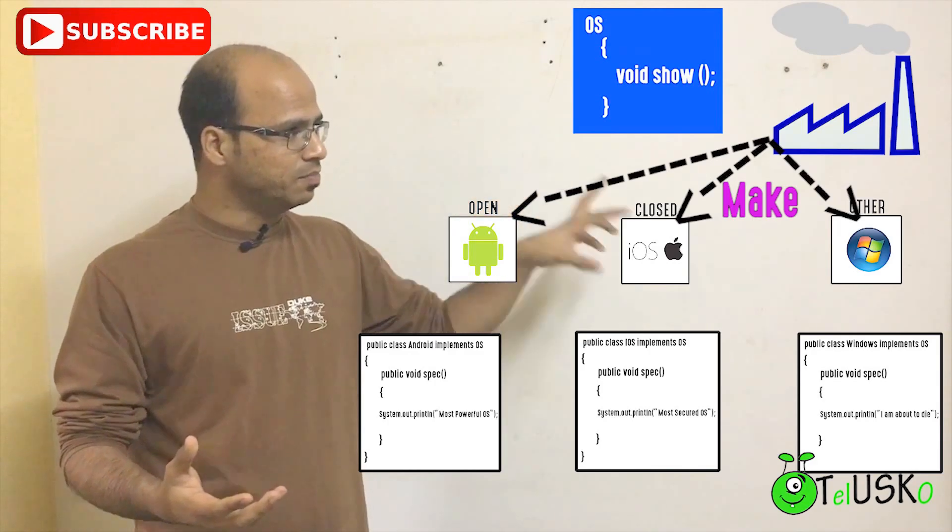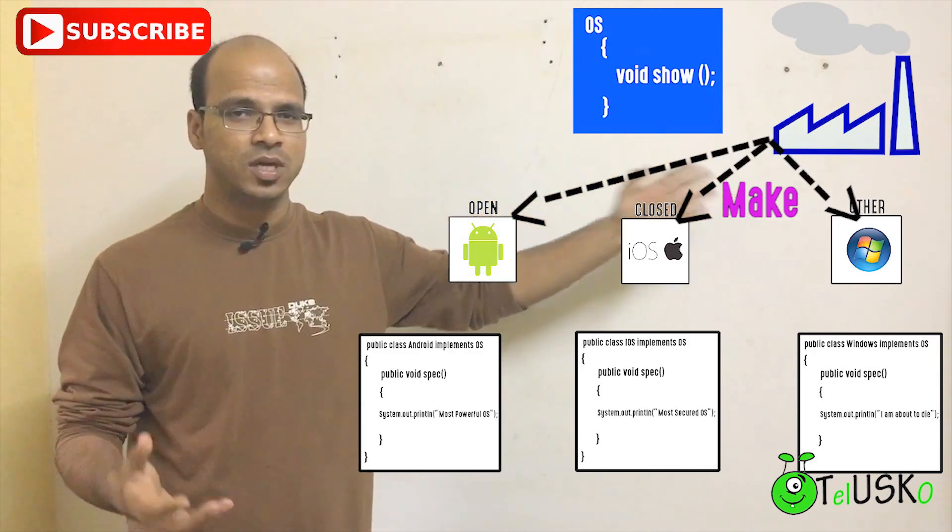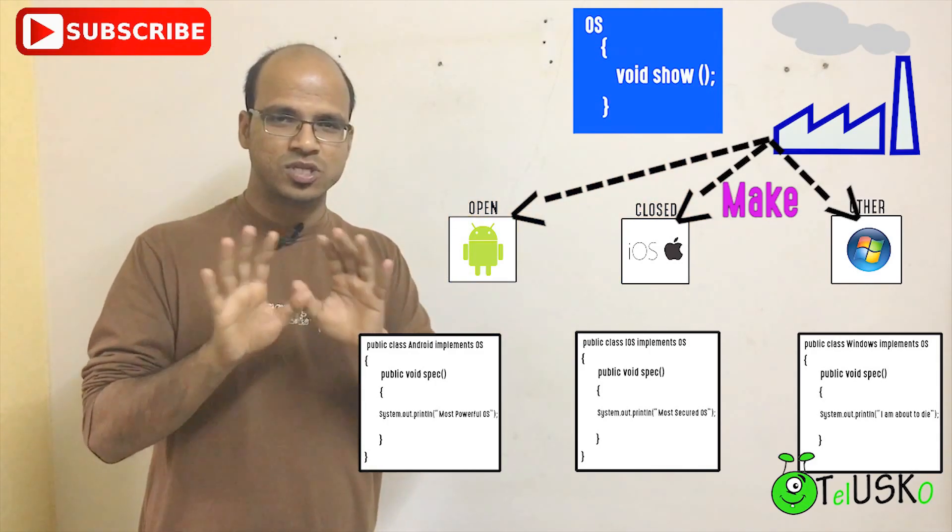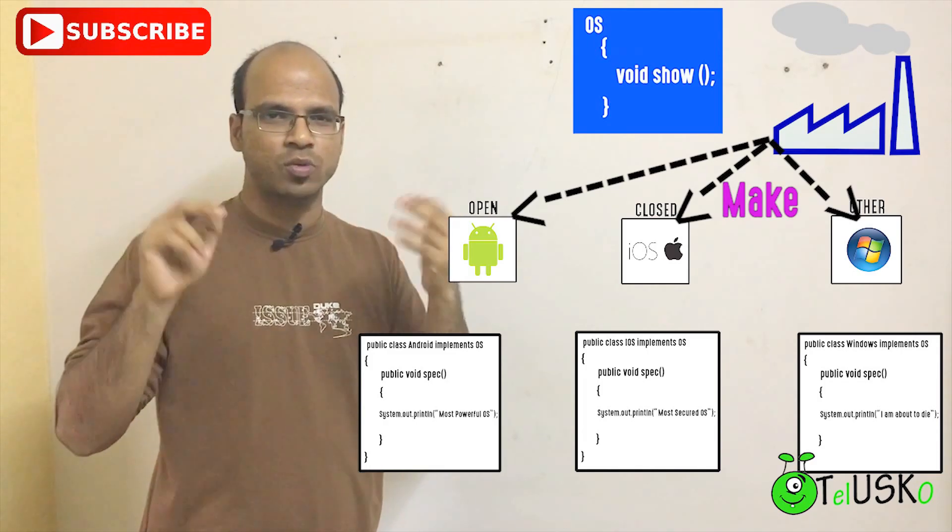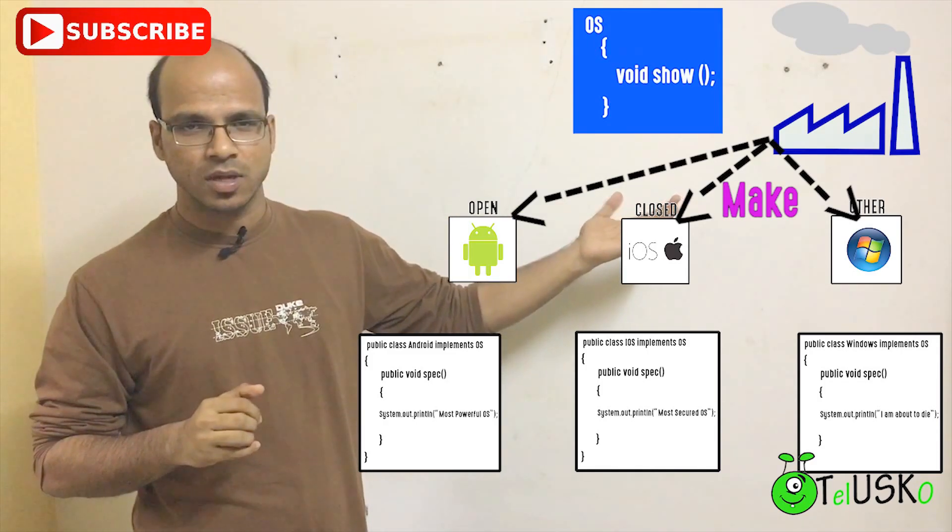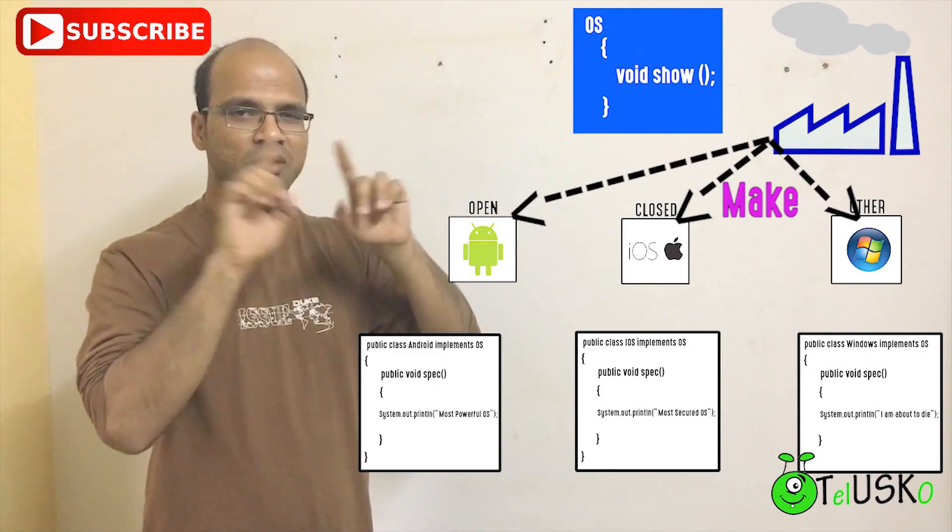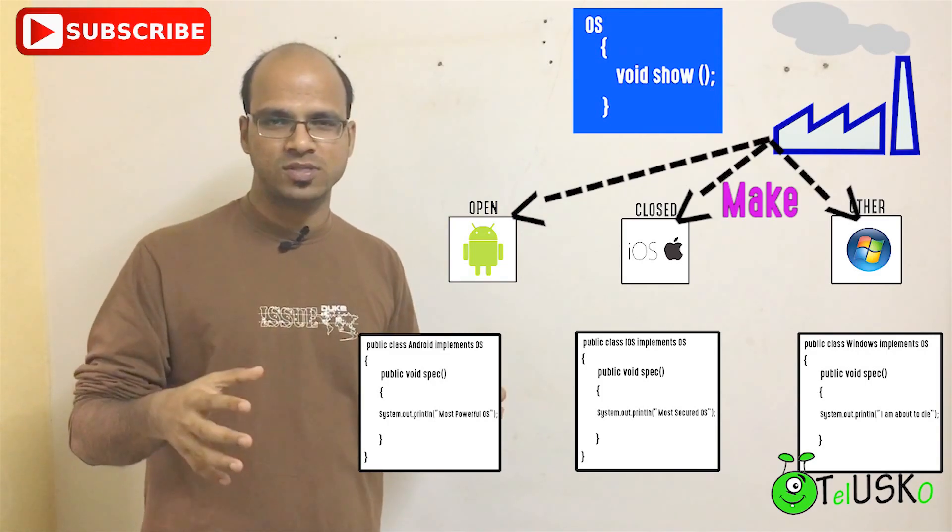You're getting the point. Maybe in future if that Symbian is replaced by Blackberry OS, you don't know about anything. You just have to specify old OS, automatically you will get Blackberry object. Who is giving those objects? It is your factory. And how to implement all these things, that we will see in the practical session.